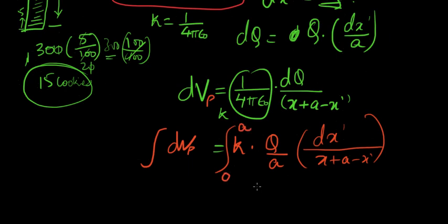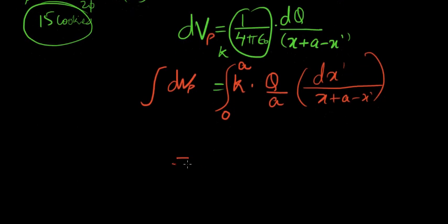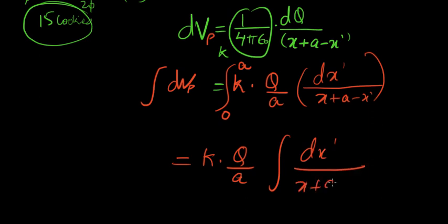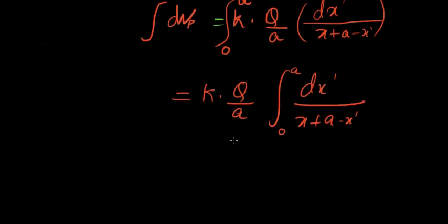Zero to a. These are all constants, so we can bring them out of the integration sign. Times Q over a, dx prime over x plus a minus x prime, going from zero to a. I'm assuming you're familiar with basic integration formulas. This is pretty simple. The integration of dx prime over a constant minus x prime should give you the natural log of this.